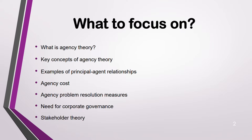In this video we are going to focus on: what is agency theory, what are the key concepts of agency theory, examples of principal-agent relationships, agency cost, solutions to it, need for corporate governance, and stakeholder theory. These two theories — agency theory and stakeholder theory — are not difficult to understand. From F1, you should already be familiar with principal-agent theory, so this is essentially a revision.